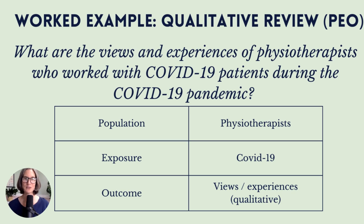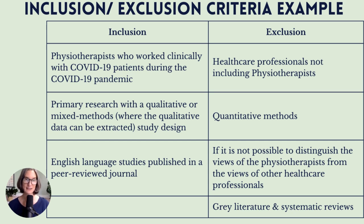Looking at the worked example we've been using — what are the views and experiences of physiotherapists who worked with COVID-19 patients during the COVID-19 pandemic? — the population are physiotherapists, the exposure is COVID-19, and the outcome is their views and experiences. So qualitative papers are what we're looking for. The inclusion criteria would be: physios who've worked clinically with COVID-19 patients during the pandemic, primary research with a qualitative or mixed methods approach where qualitative data can be extracted, and English language studies published in peer-reviewed journals.